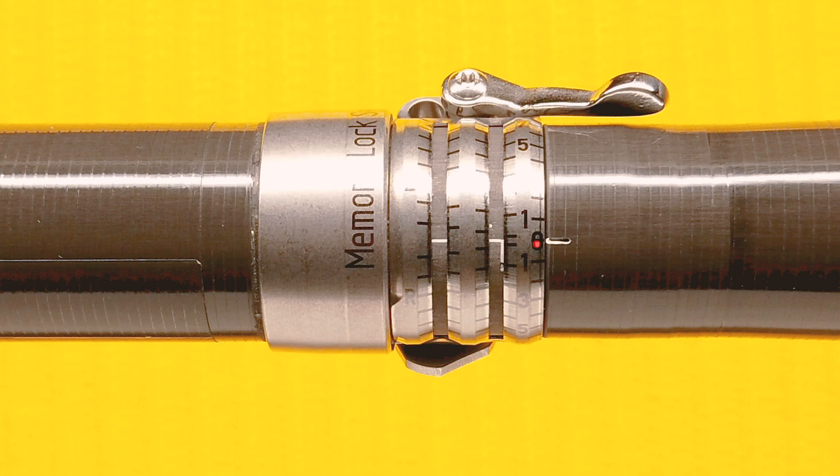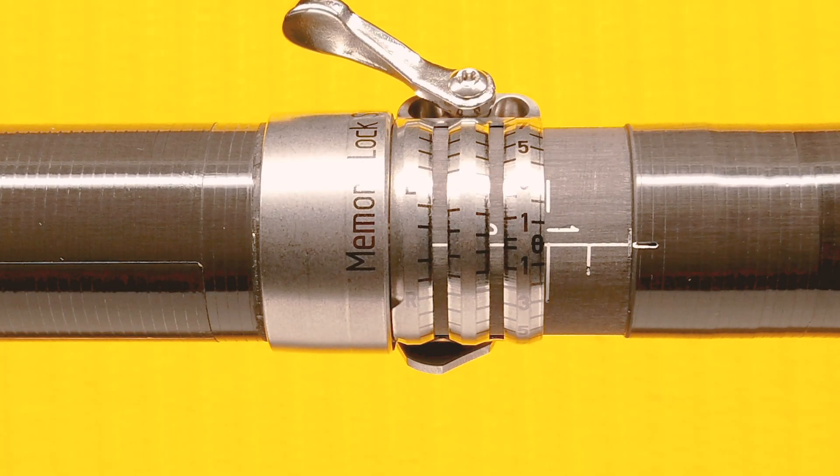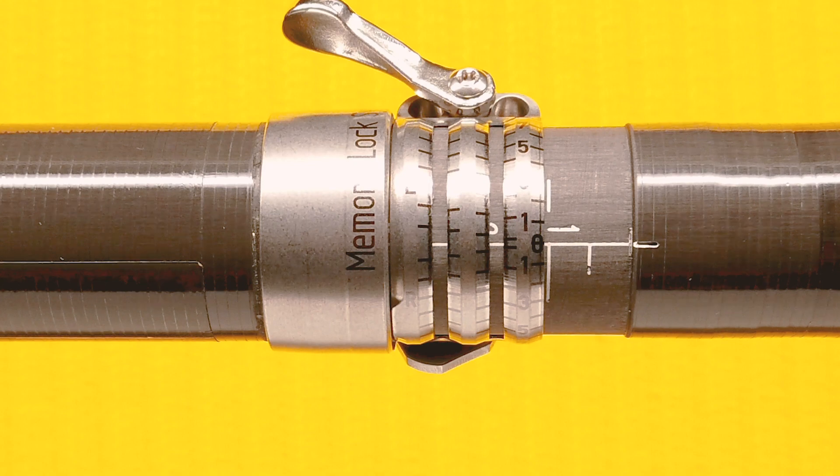This number zero indicates zero-degree pitch. That means, if you align the white ruler on your shaft to this zero, your blades will be perfectly flat and parallel on both ends.